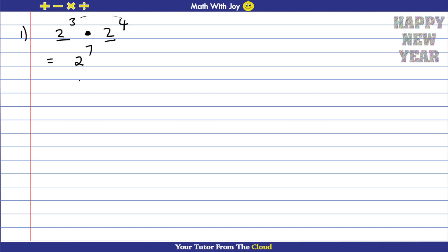So it will be 2 to the power of 7. Very important: when you have the same bases and they multiply, you add the exponents. Now the same idea but a bit different — when you have the same bases, like 2 to the power of 4 divided by 2 to the power of 2, and the bases are dividing, you have to subtract the exponents.